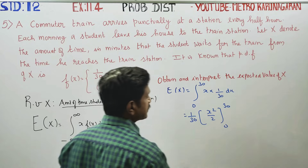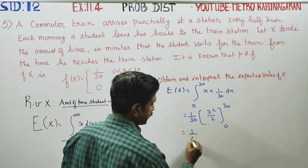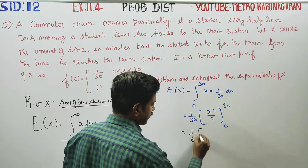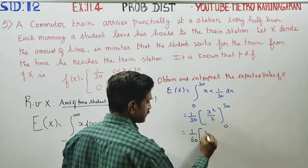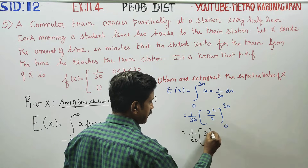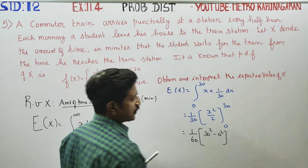Applying the upper limit minus lower limit, the 2 comes to the denominator giving 1/60. Substituting the upper limit: 30 squared minus 0 squared, which is 900 divided by 60.